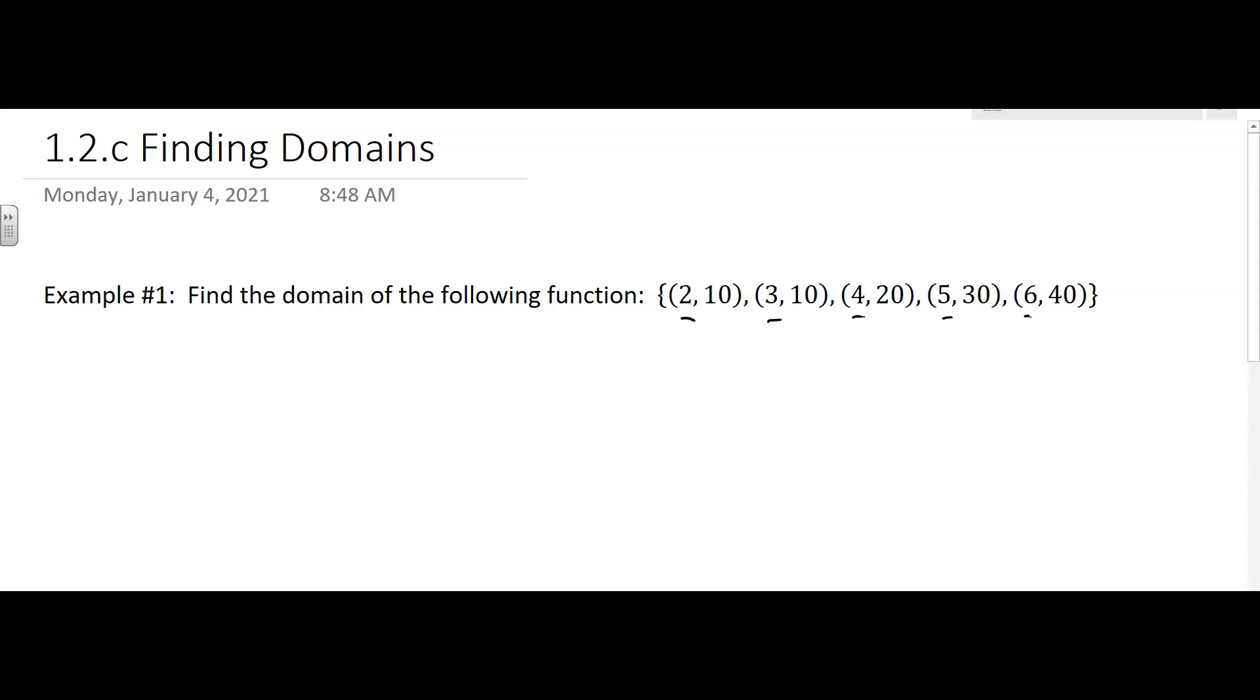There are 1, 2, 3, 4, 5 ordered pairs. So in our domain we're going to have five elements. So we write this, it's a finite set, we write it as a set.